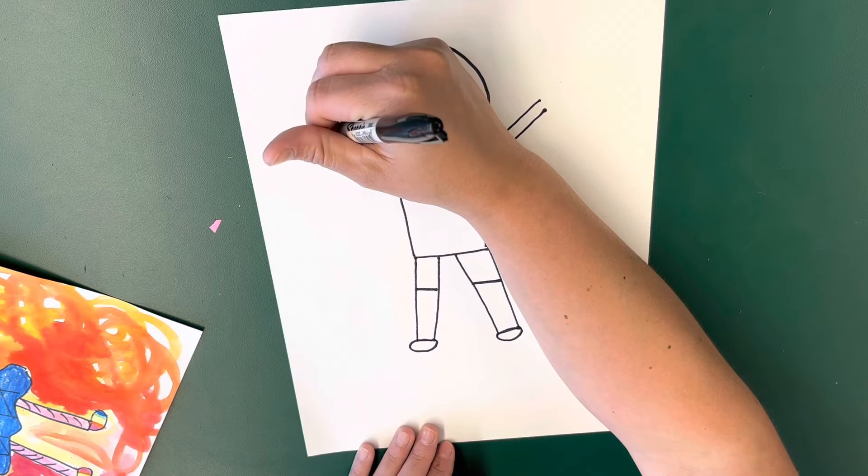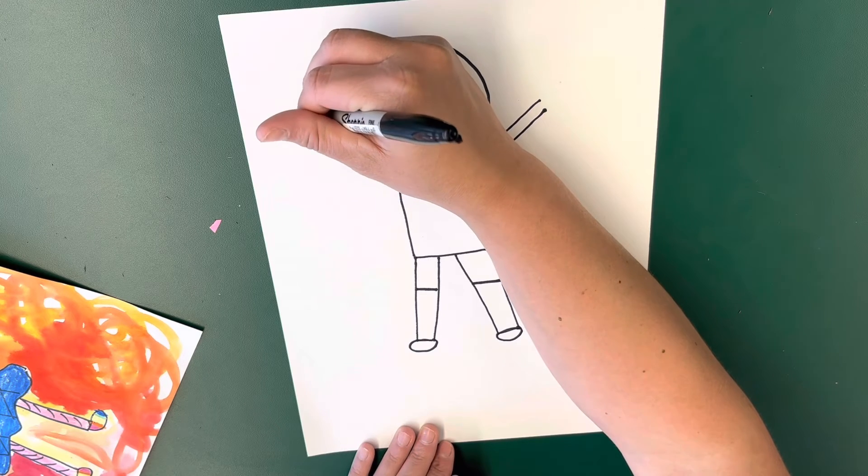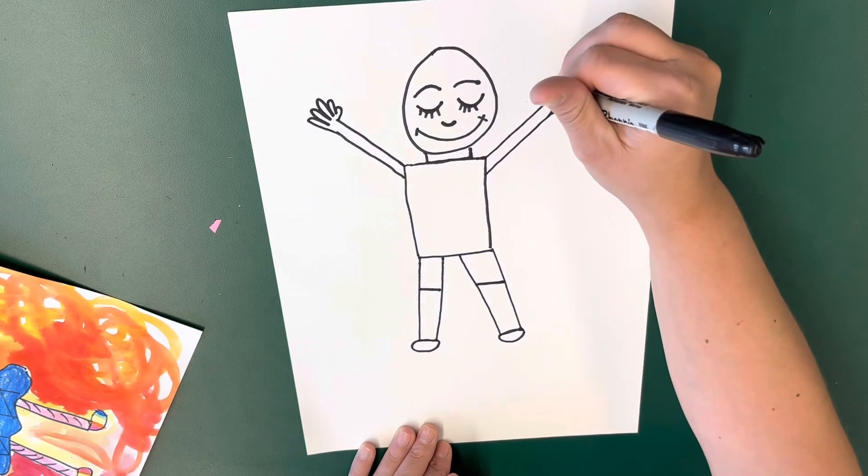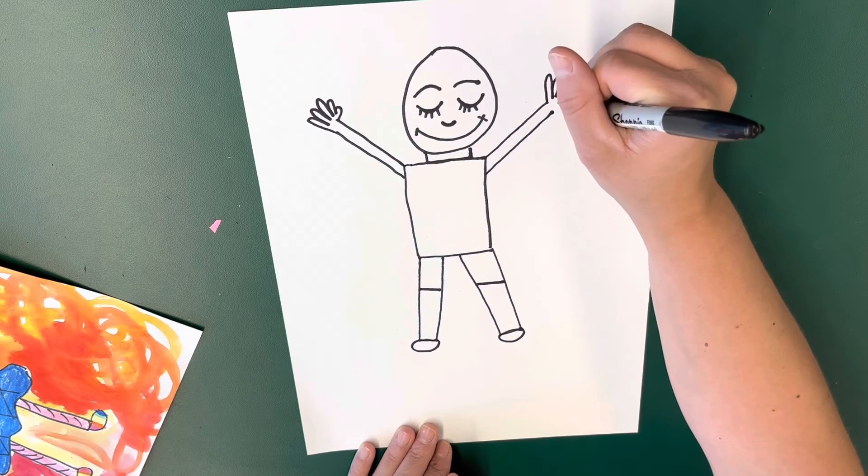So what we're going to do is we are going to draw one, two, three, four, five if you can. If not, then just do three or four fingers.